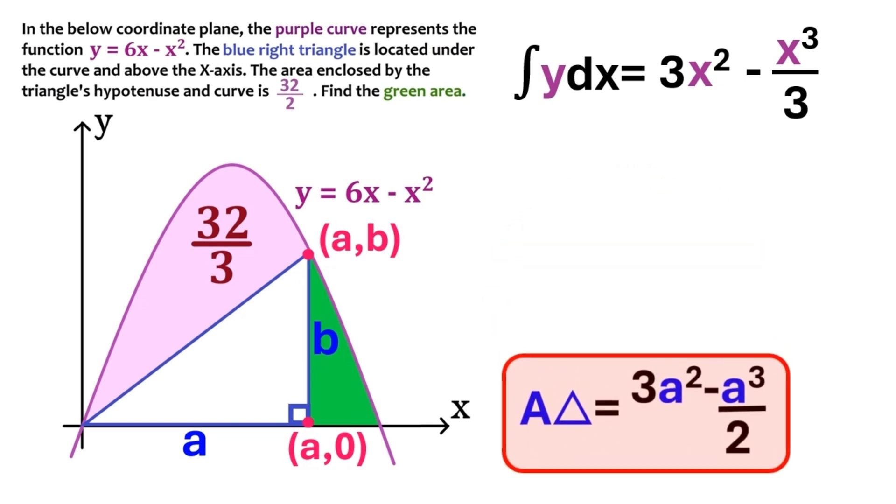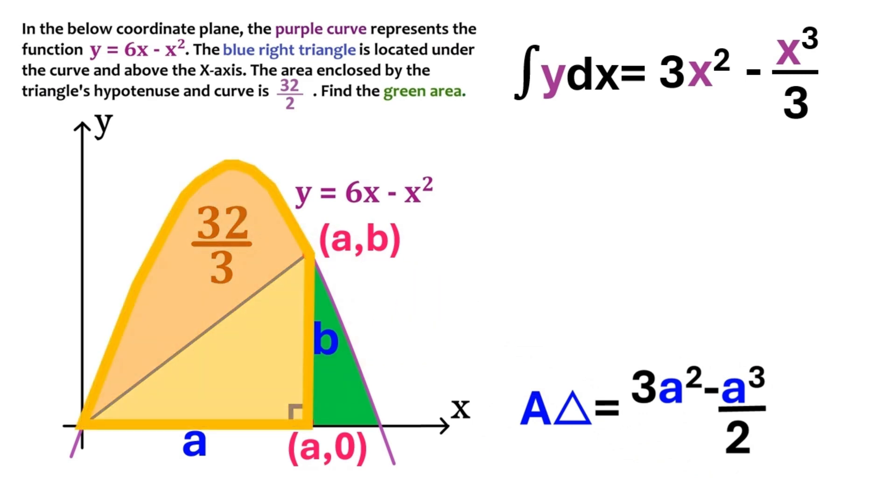And now it is time to find this yellow region's area using the integral. To do that, we need to find its starting point and its end point on the x-axis. Alright, the x-value of the starting point is obviously 0. And the x-value of the end point is a.